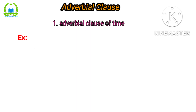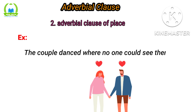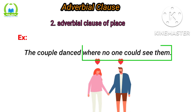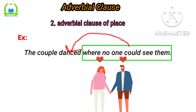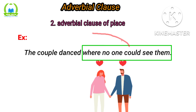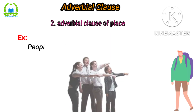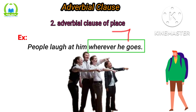The second type is the adverbial clause of place. Example: 'The couple danced where no one could see them.' Where did they dance? In a place where people could not see them. So 'where no one could see them' is the dependent clause telling us the place. Another example: 'People laughed at him wherever he goes.' The clause 'wherever he goes' is the dependent clause introduced by the trigger 'wherever.'